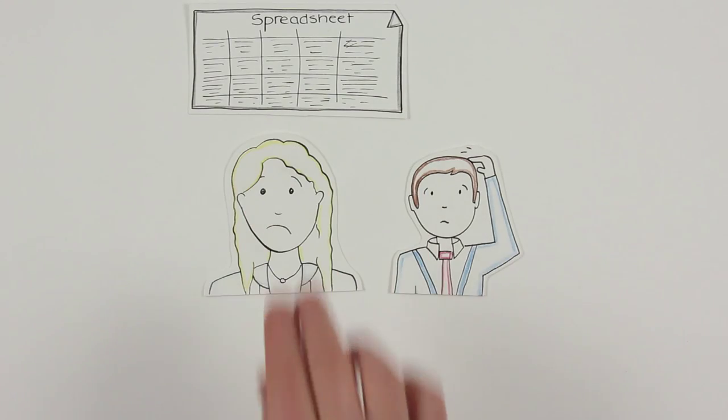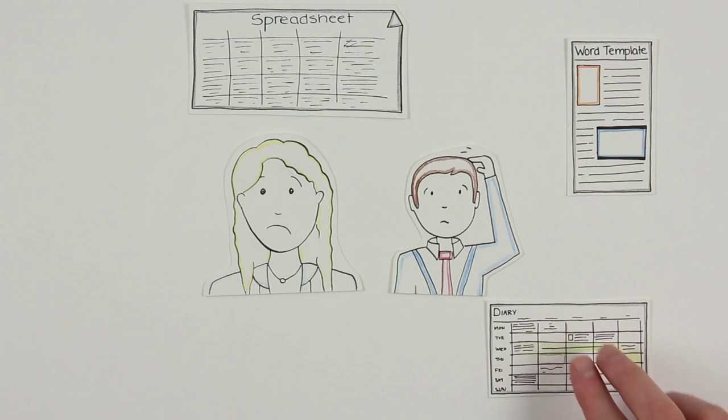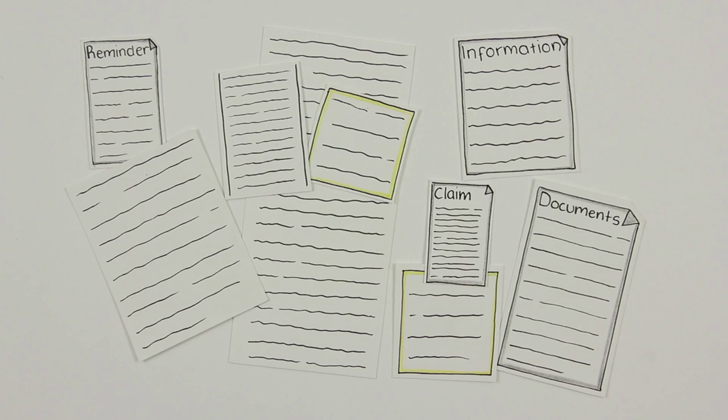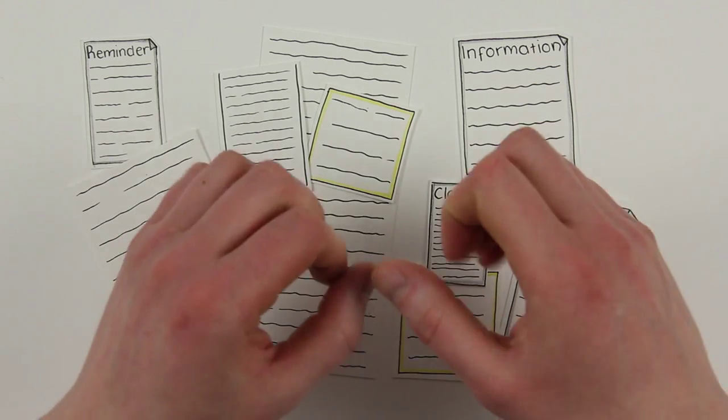Working with a core legacy system and supported by a cloud of disparate, unintegrated supporting technologies and practices, the claims handler has to juggle multiple processes in a complex world.